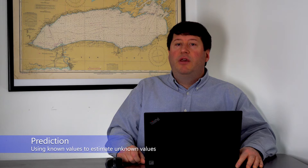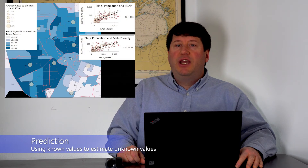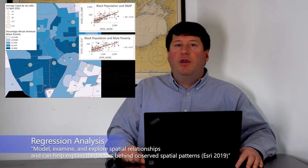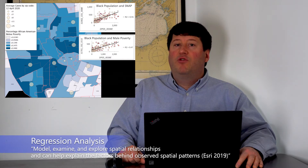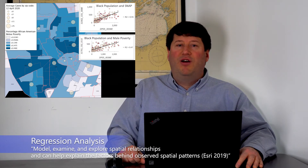Data prediction is using known values to estimate unknown values. Many GIS prediction techniques are based on regression analysis, which allows you to model, examine, and explore spatial relationships and can help explain the factors behind observed spatial patterns. Once you model spatial relationships, predictions can be made using regression analysis.